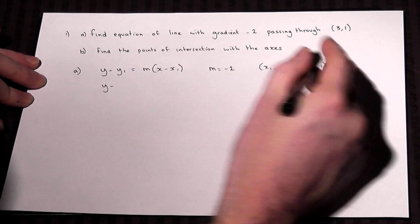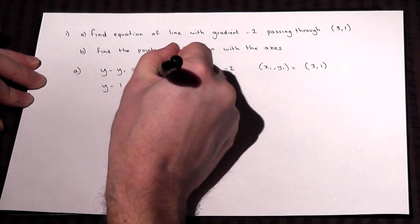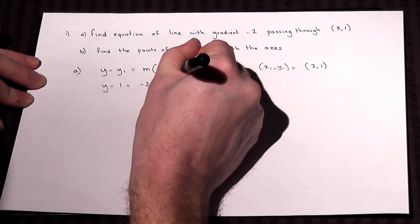So y minus y1 will equal m, which is minus 2, times (x minus x1).